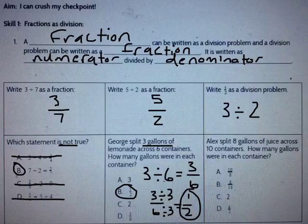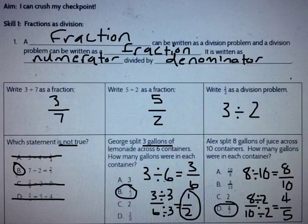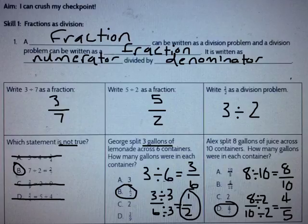Now you try one. Alex split 8 gallons of juice across 10 containers. How many gallons were in each container? The correct answer is D, 4/5. 8 gallons are split across 10 containers, so it's 8 divided by 10, which makes 8/10. When I simplify, the result is 4/5.